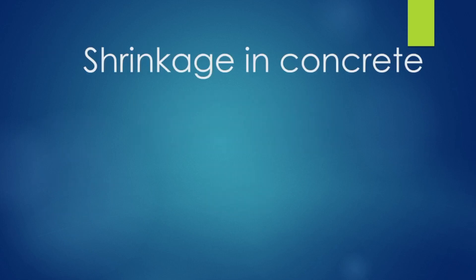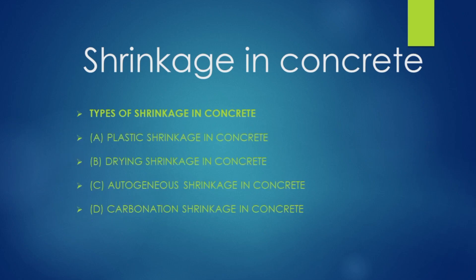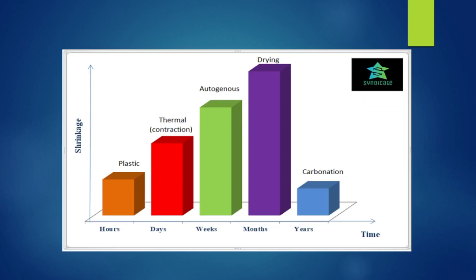Various types of shrinkage can be found: plastic shrinkage, autogenous shrinkage, drying shrinkage, carbonation shrinkage, and thermal shrinkage. Shrinkage will start at an early stage. Plastic shrinkage is the initial stage, followed by autogenous, then drying shrinkage, and then carbonation shrinkage.